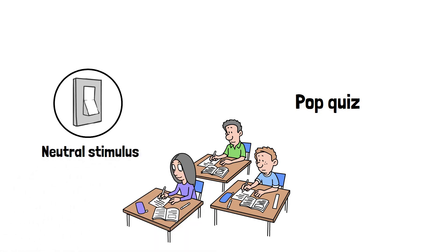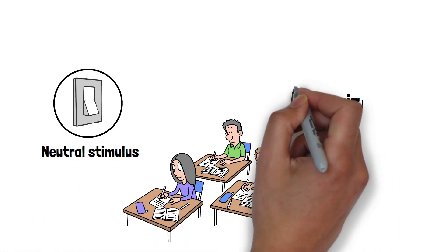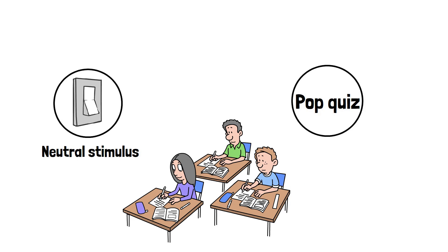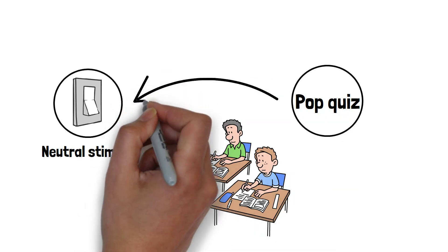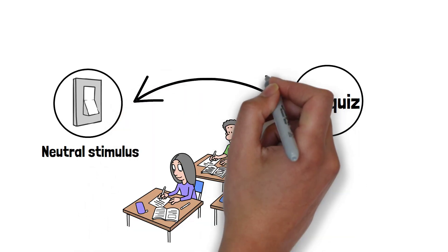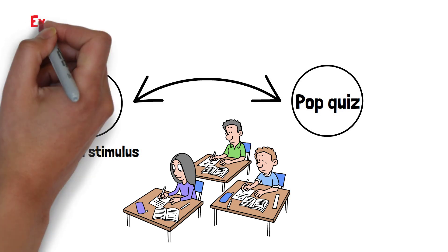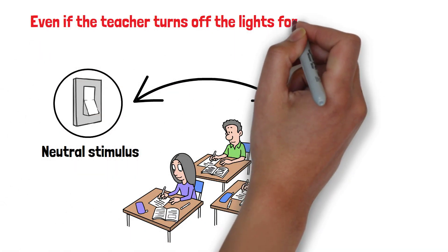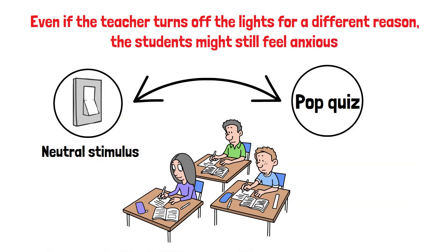may start to cause anxiety in the students. They begin to associate the light being turned off with the stress of a pop quiz. Eventually, even if the teacher turns off the lights for a different reason, the students might still feel anxious.